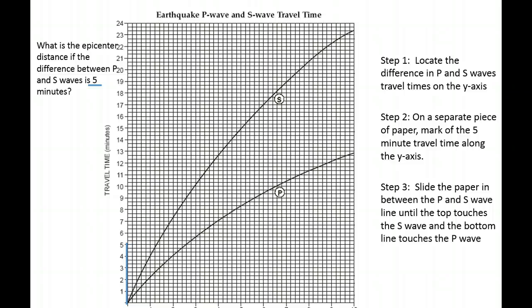So use those lines that they give you on the chart to make a straight line going down. Okay? So that's what this is going to look like. We slide that paper up so that it goes in between and we find where the top meets the top, the bottom meets the bottom. And then, for the last step, we follow the line down to determine our epicenter distance. So in this case, it leads just below the 4,000 mark at 3,800. So our answer is 3,800 kilometers.